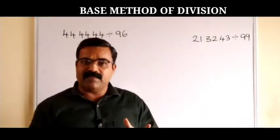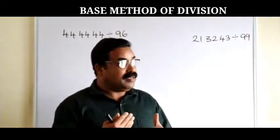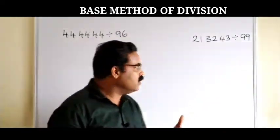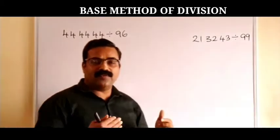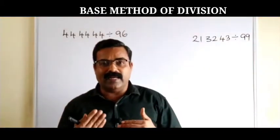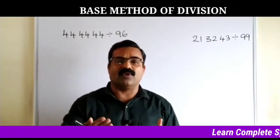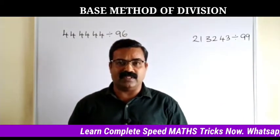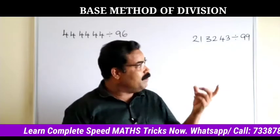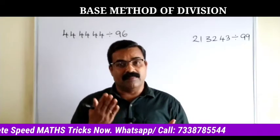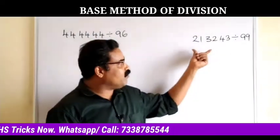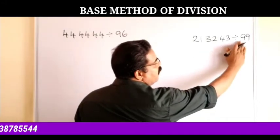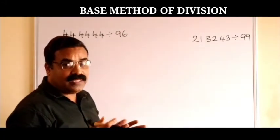I have taken base number 100. When I say base number 100, I am dividing big numbers by numbers near 200. For example, 99 is a number near 200, and 96 is also a number near 200. So if you want to divide numbers by 99, 98, 97, 96, or numbers just more than 100, we use the base method of division. Let us take the first example: 213243 divided by 99. Here 99 is a number near 200 and the base number is 100.